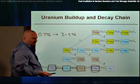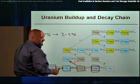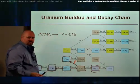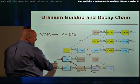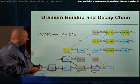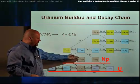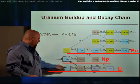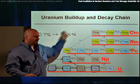That U-236 could also absorb a neutron and produce U-237. U-237 could then beta decay — releasing an electron — to produce neptunium-237. Neptunium-237 is a different element than uranium; it is the element neptunium. Each of the rows on this chart are individual elements: uranium, neptunium, plutonium, americium, and curium.